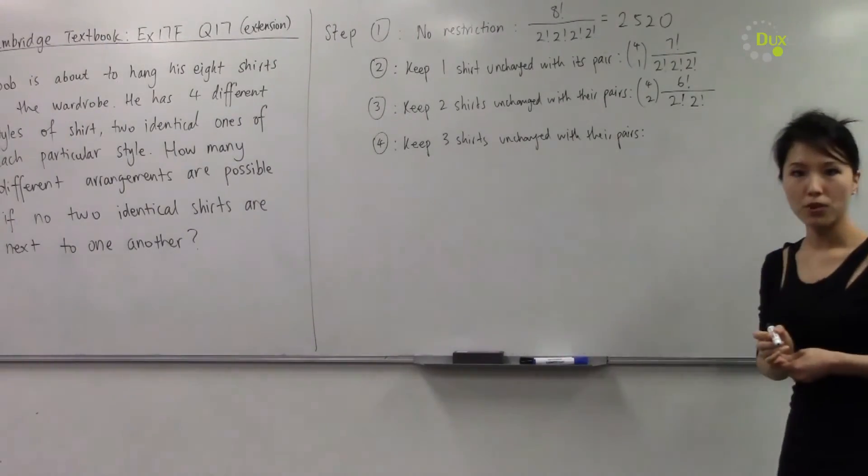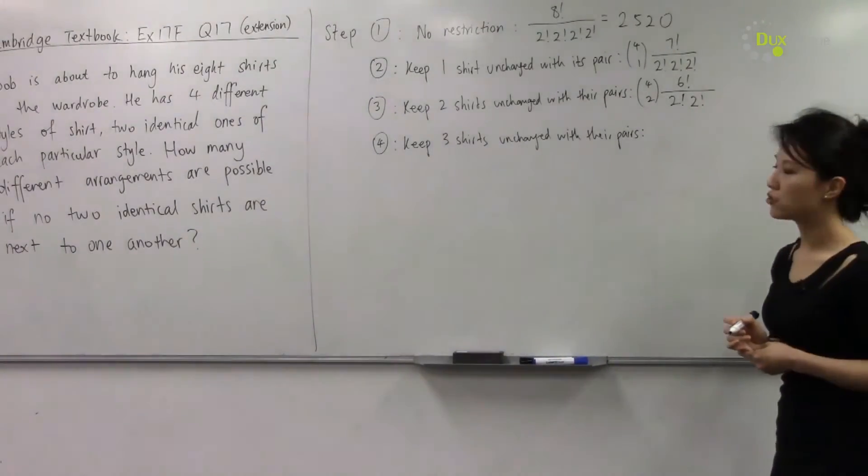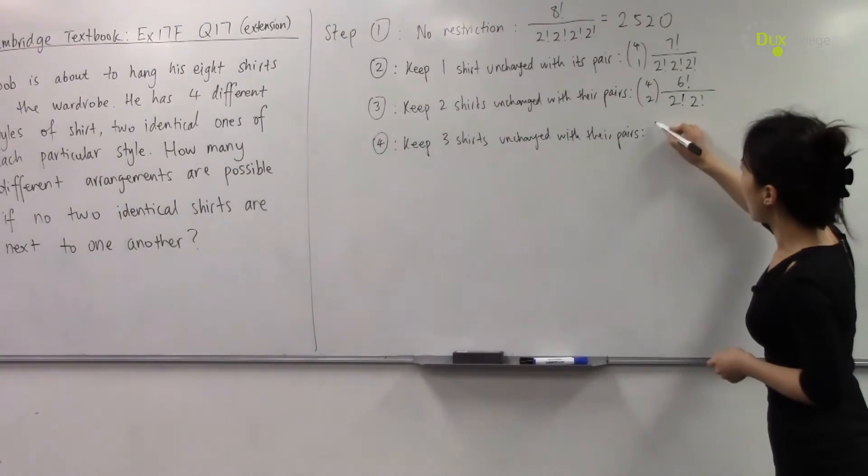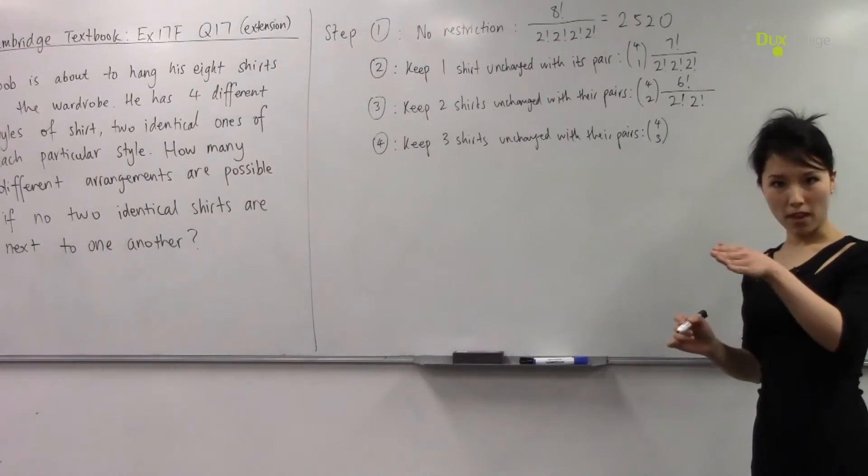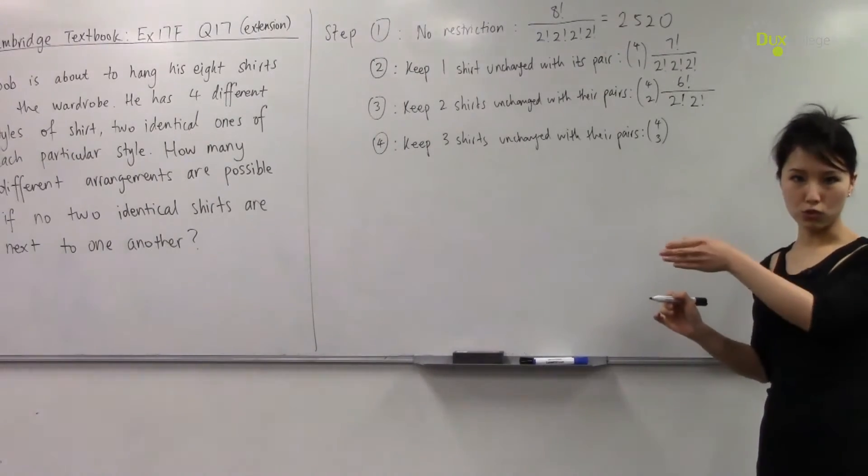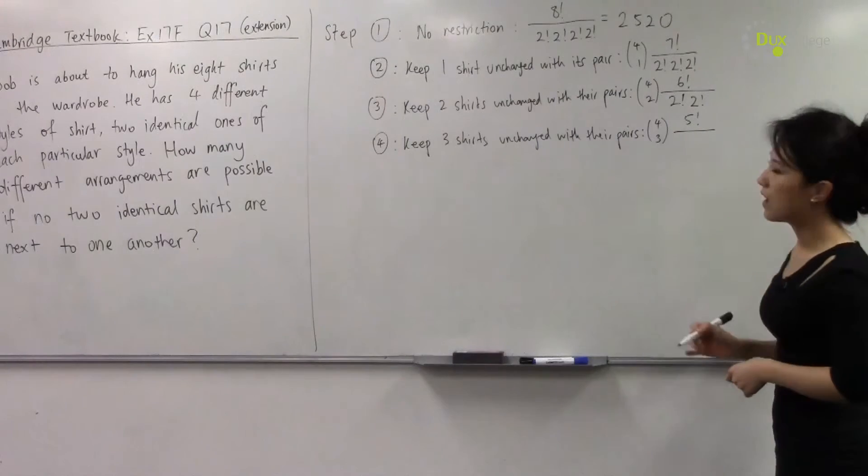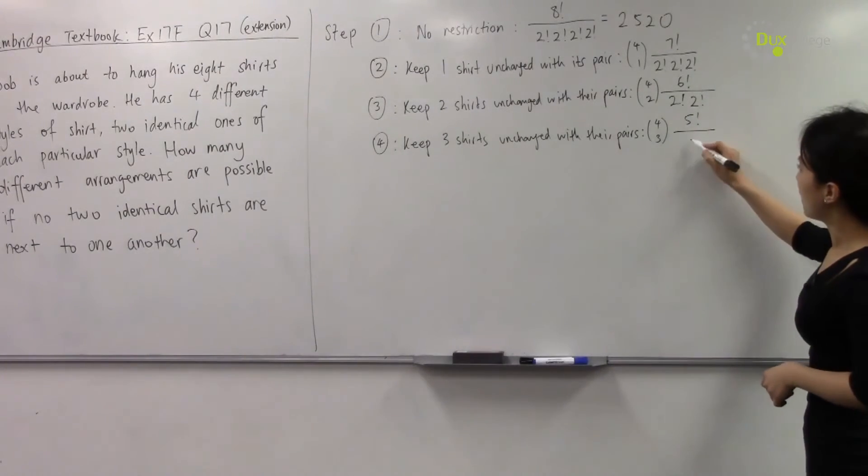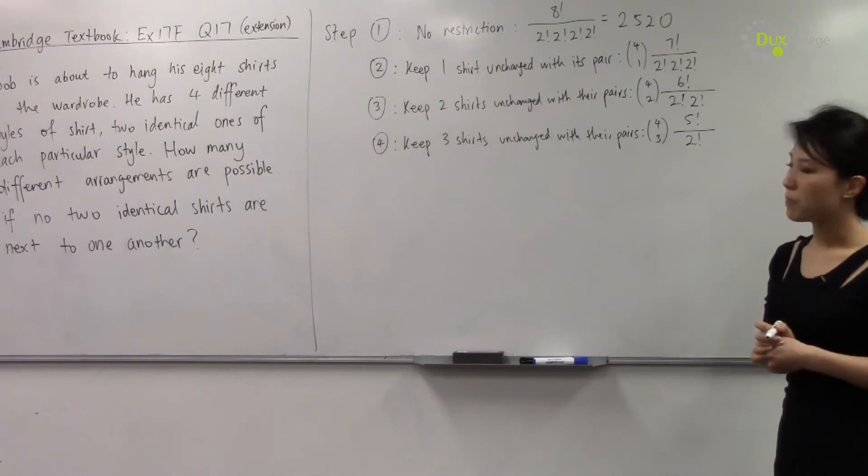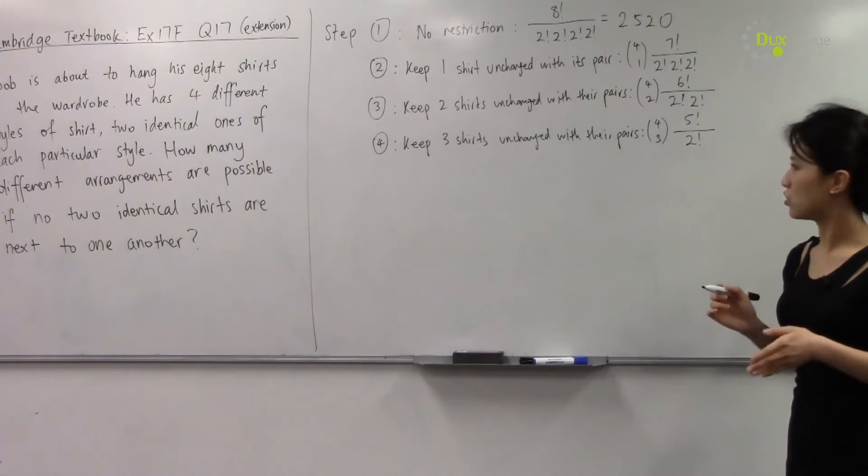And in step number four, we're keeping three shirts unchanged with their pairs. So out of four pairs we choose three. So we have three pairs with two individual shirts, so we are arranging five shirts in total. And we have to divide it by the two remaining individual shirts.